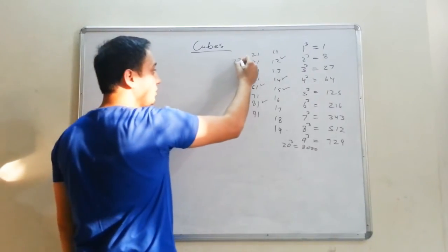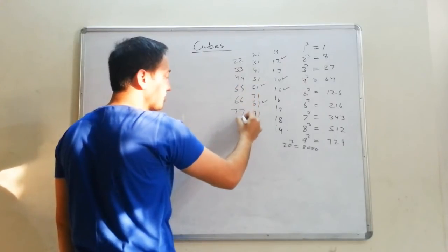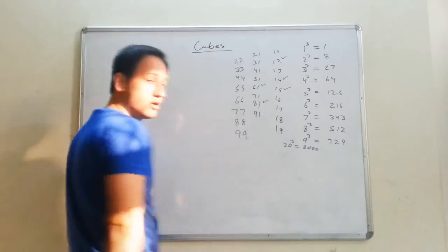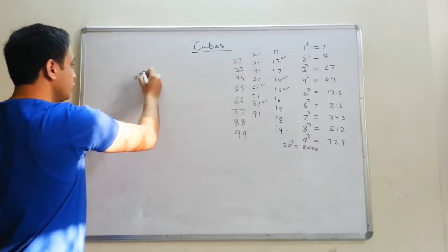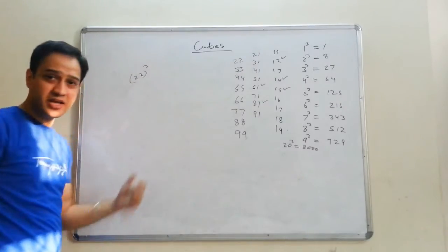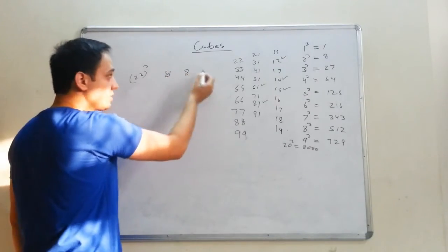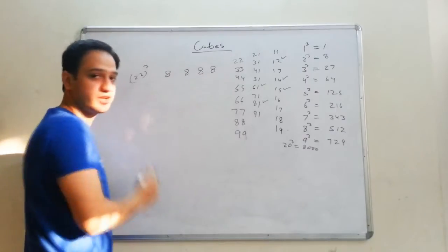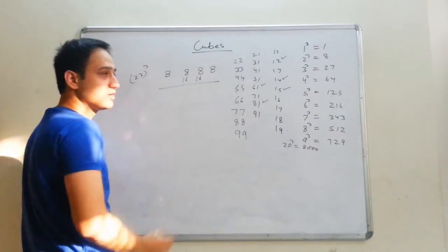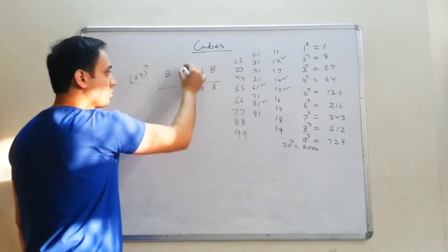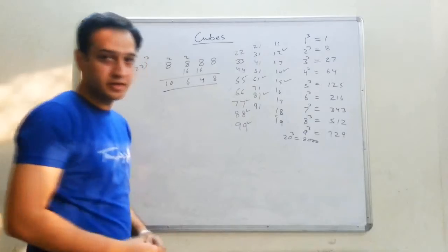If you have to do a cube of 22, 33, 44, 55, 66, 77, 88 and 99 — for same-digit numbers, the method is: for cube of 22, write cube of 2 four times: 8, 8, 8, 8. Then double the middle two: 16, 16. Add all these digits: 8, then 24 — write 4, carry 2 — then 26, write 6, carry 2 — then 10. The answer is 10,648.